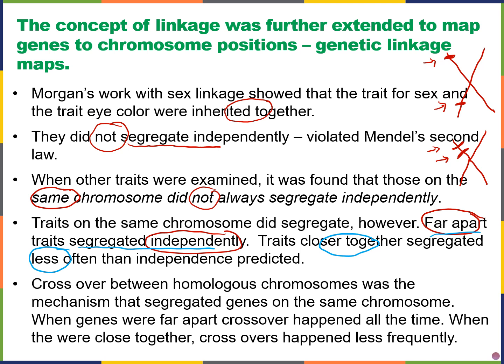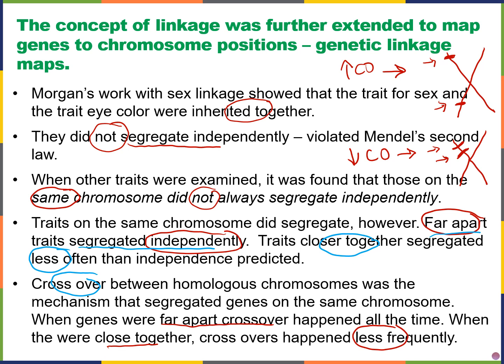The reason genes on the same chromosome can still segregate independently is because of crossing over. If genes are far apart on the same chromosome, crossover occurs much more frequently. But if they are close together, crossing over happens much less frequently. That takes us to the end of the first video for Chapter 13. In the next video, I'm going to walk you through a specific example of inheritance patterns of unlinked and linked genes in the fruit fly, or drosophila.